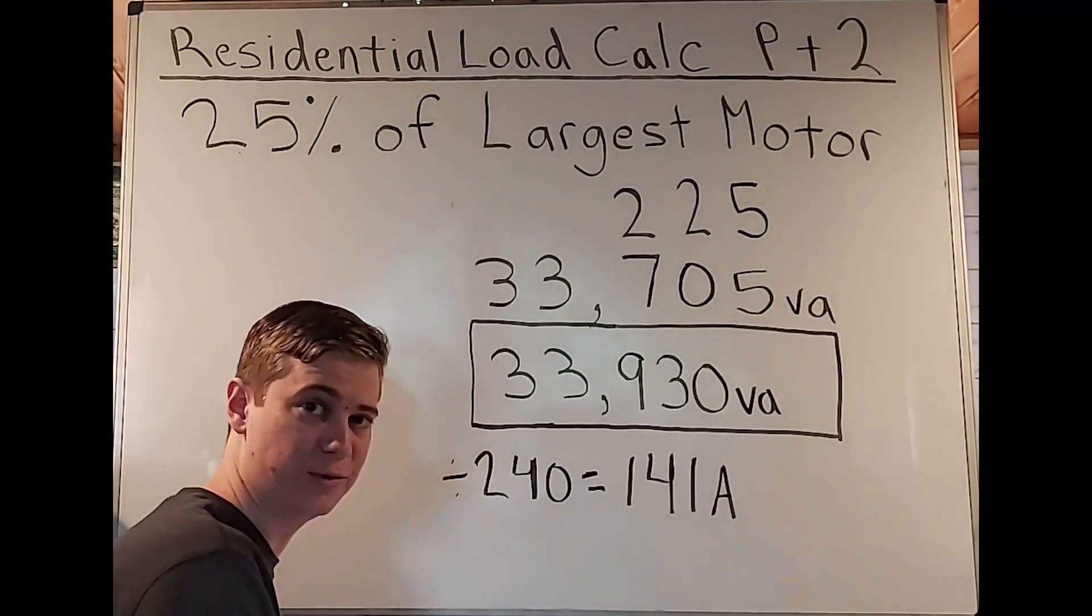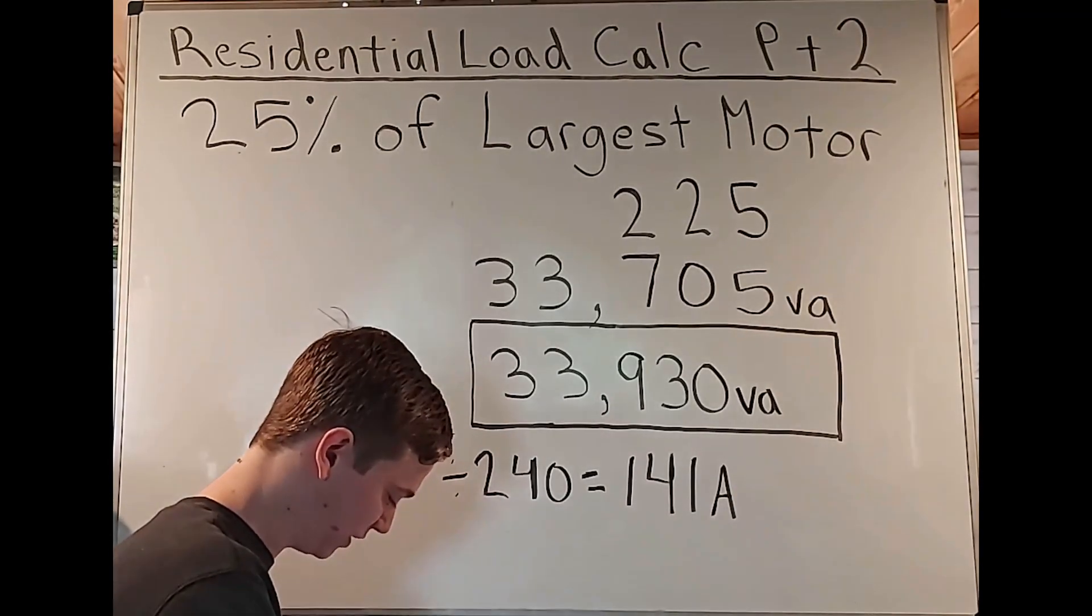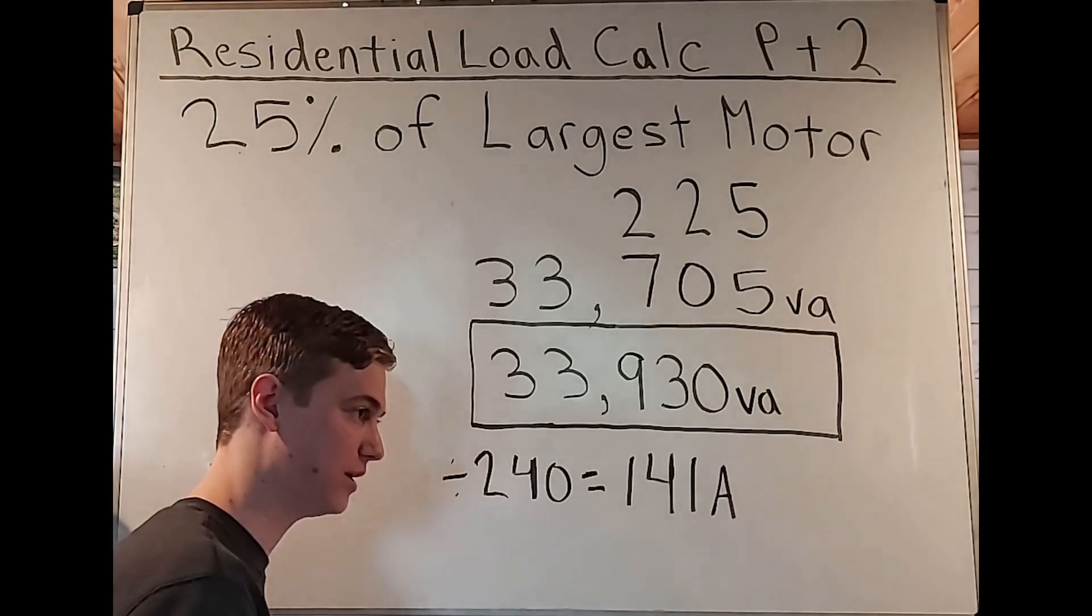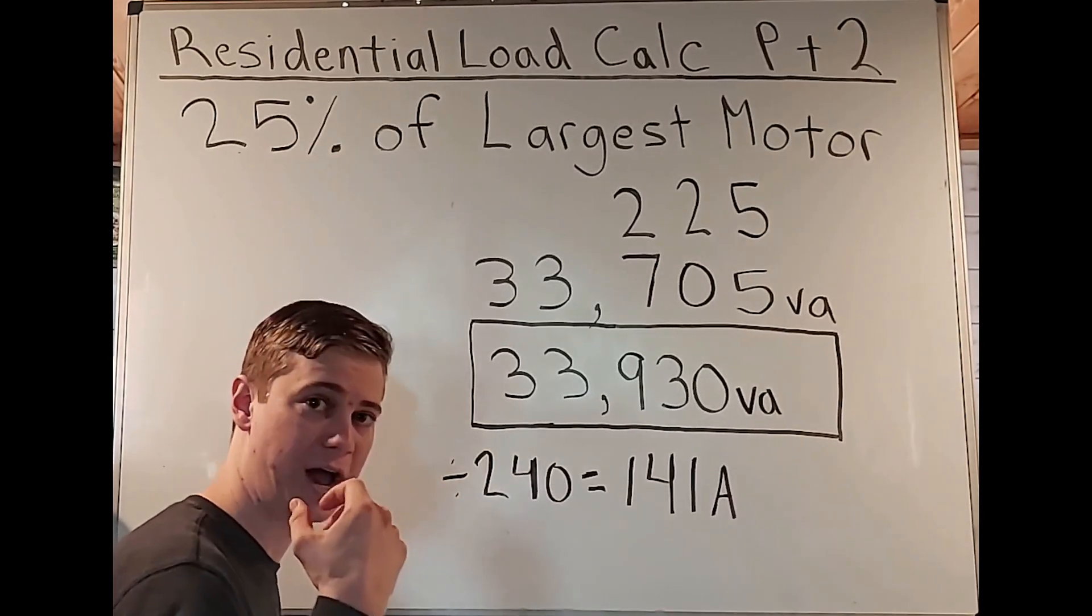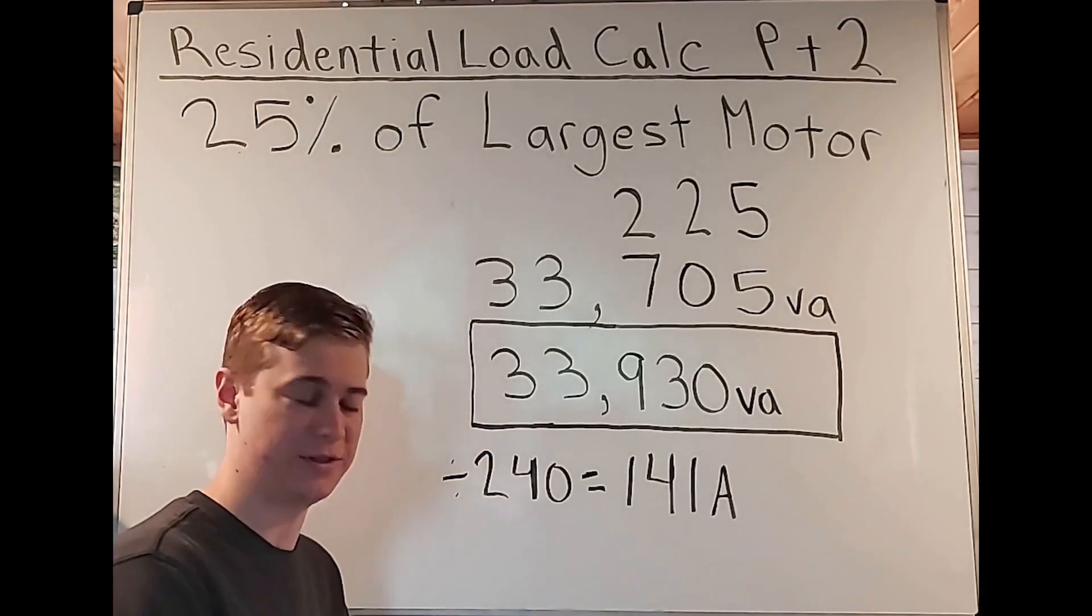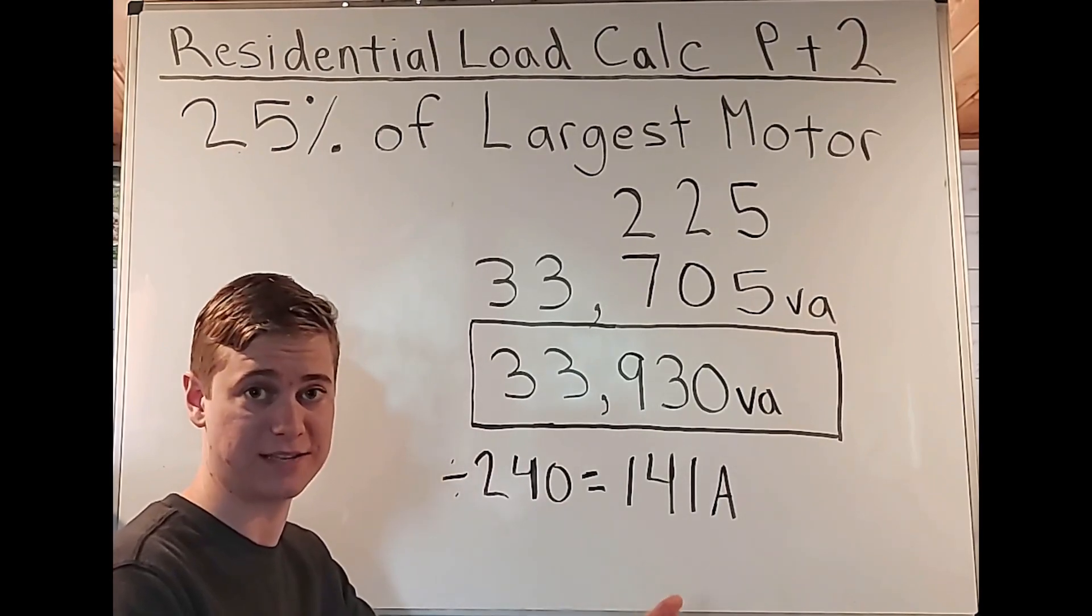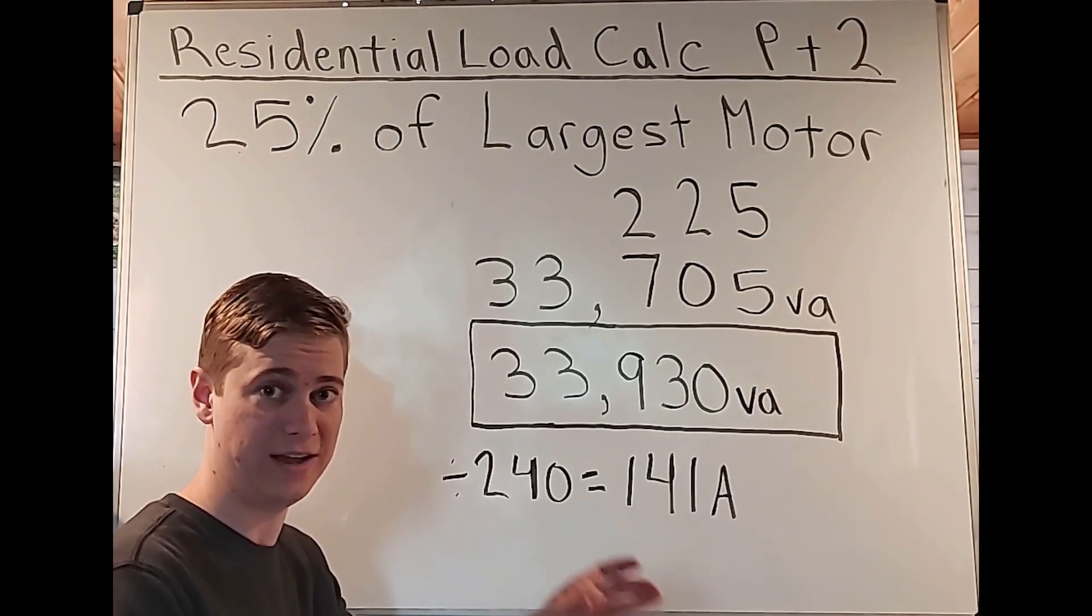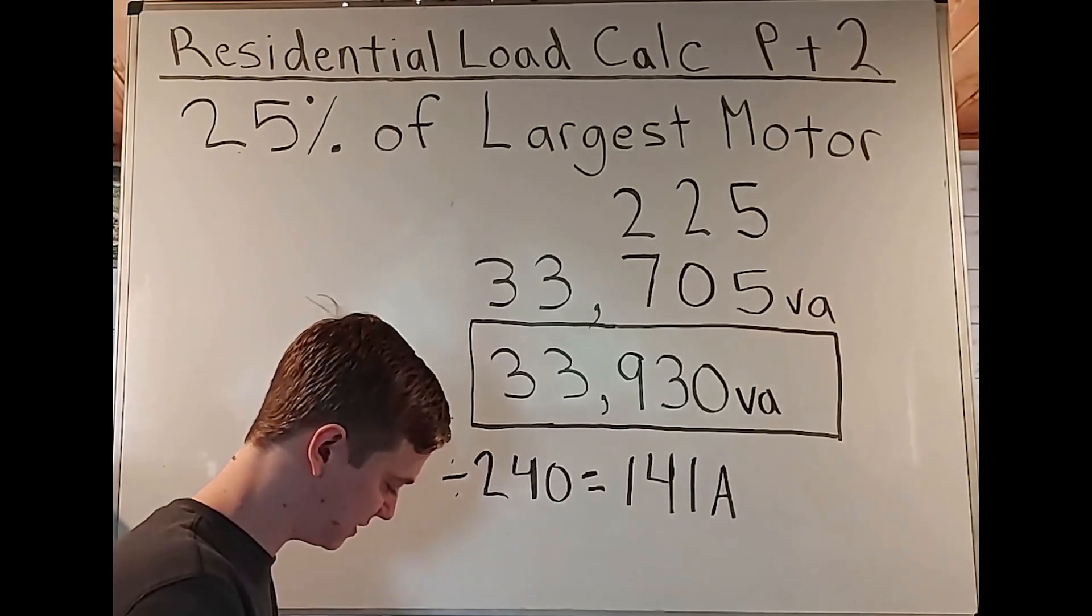And that is that the ampacity of the conductors does not correspond with what they call a standard amperage rating. This is of course of a fuse or a circuit breaker. So that's where, when we're looking at table 240.6A, we saw the 125 and we saw the 150, but we're dealing with 141.